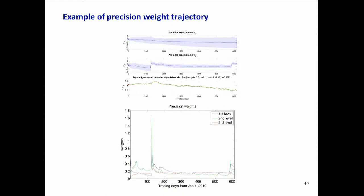It's most extreme at the second level, where you see the precision weight shooting up. But then after the model has caught up with reality, you see the precision weight dropping again, because now it would be maladaptive to throw information away too quickly. So we want to slow down.